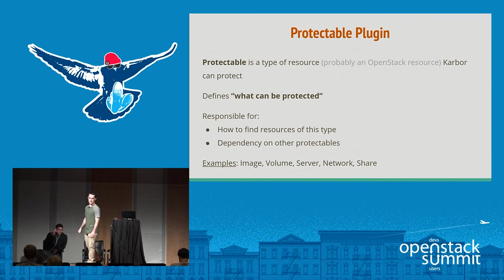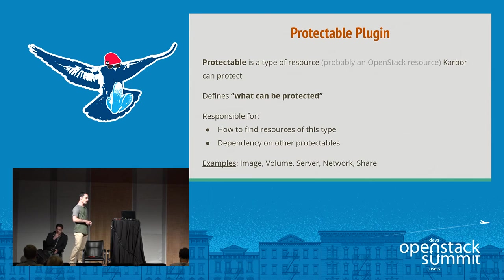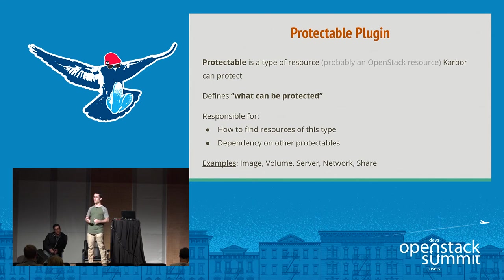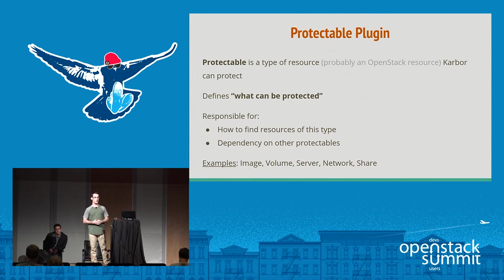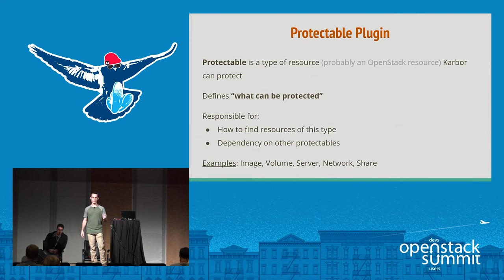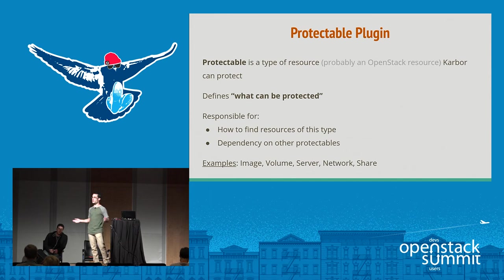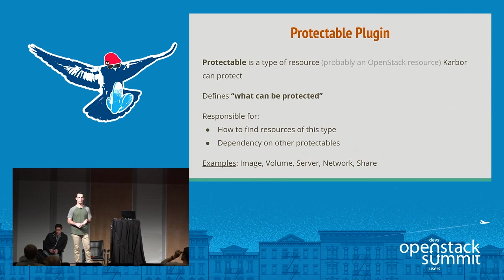A protectable plugin is about finding new resources. If you have a new resource we haven't written a plugin for yet — for example Trove, other OpenStack resources, or even non-OpenStack resources — you can write a new protectable plugin to find them. Right now we have protectables for images, servers, volumes, and shares.